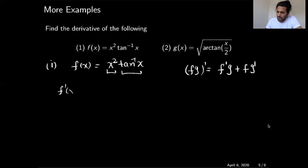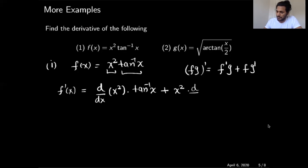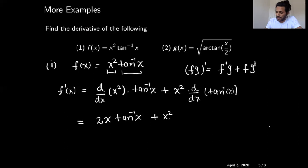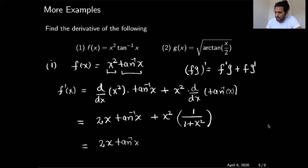Using the product rule with Leibniz notation: dy/dx equals the derivative of x squared times tangent inverse x, plus x squared times the derivative of tangent inverse x. The derivative of x squared is 2x, and the derivative of tangent inverse x is 1 over 1 plus x squared. So the expression simplifies to: 2x times tangent inverse x plus x squared over 1 plus x squared. That is the derivative of the function, and I will box the answer.